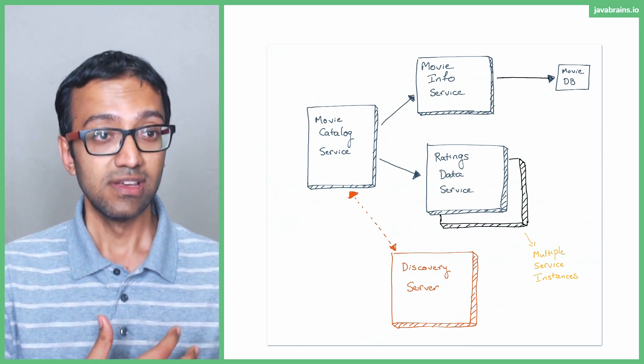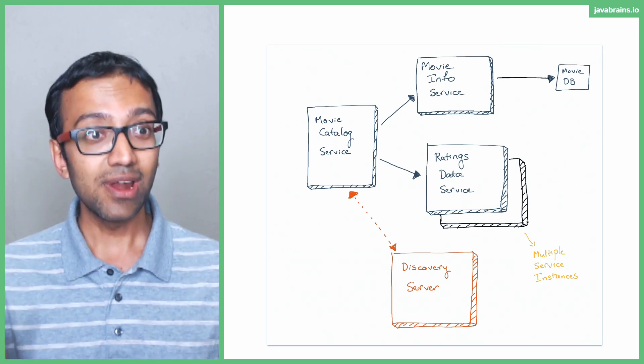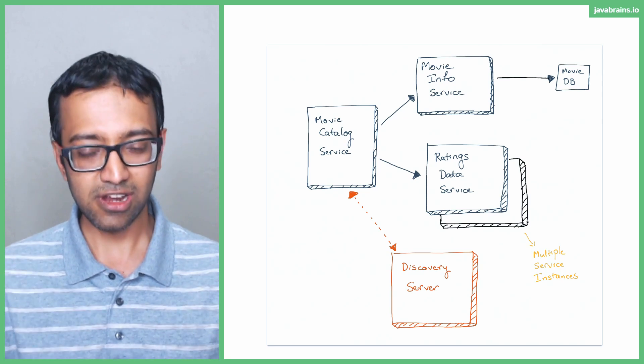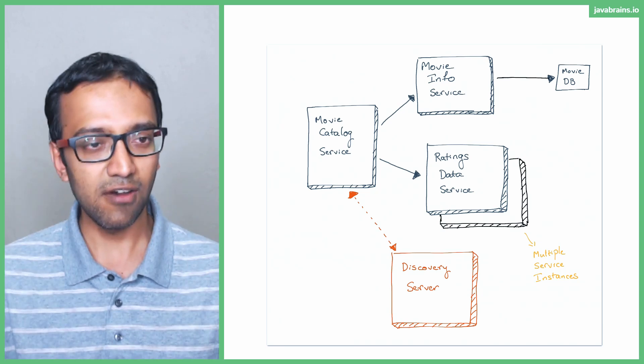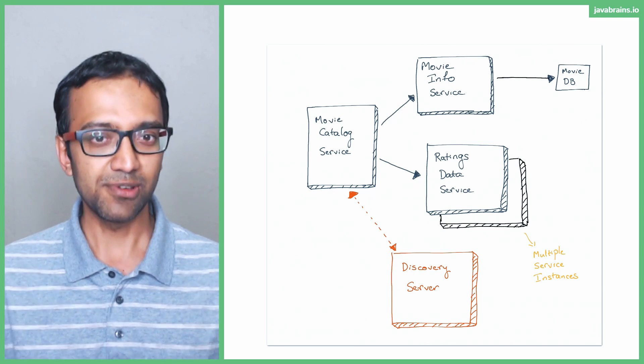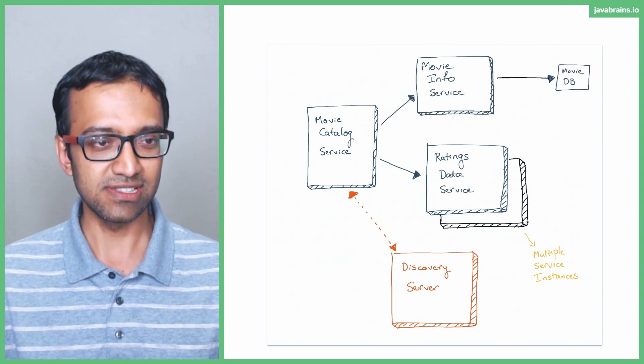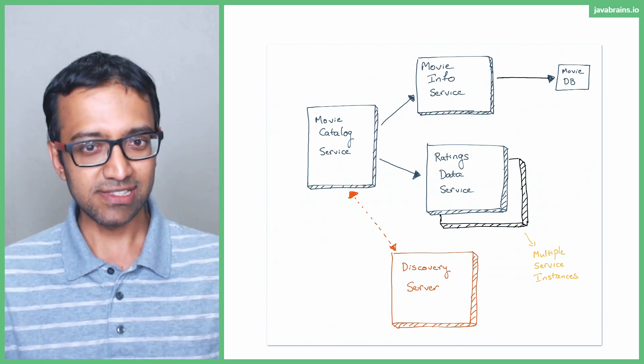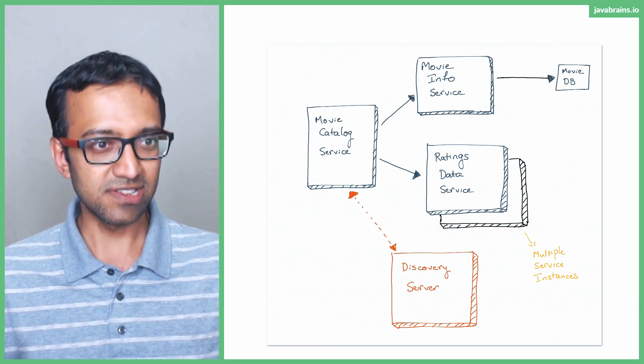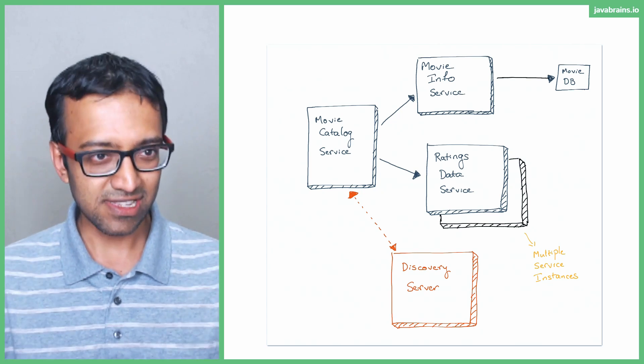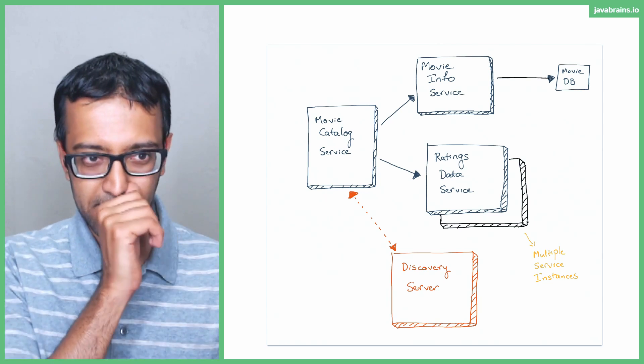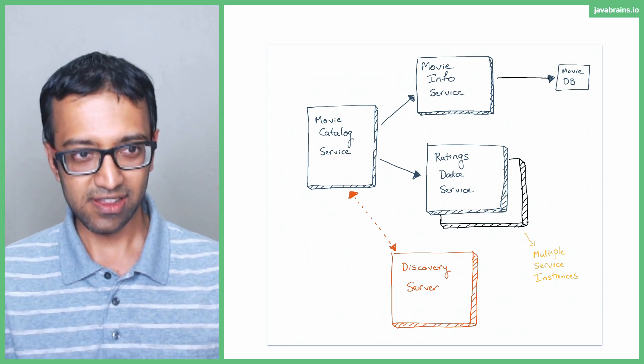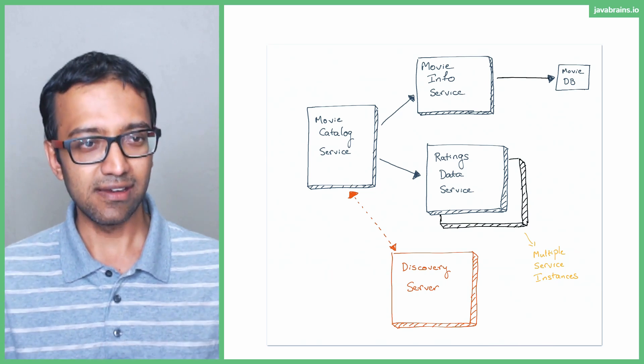Thanks to service discovery, you don't have to do a whole lot to make this work. You know how we talked about, if you've seen workshop one level one, how these things register with Eureka. When you create a new instance of a service microservice and say this is a Eureka service, it's going to register with Eureka and say, hey Eureka, I'm ratings data service, I'm here. Create one more instance. It says I'm rating data service, I'm here. And the discovery server is like, okay, I got two of these guys and it's going to make a note of it. It's going to register everything.